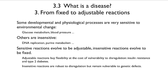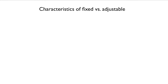Insulin resistance and type 2 diabetes are pathologies that result from an adjustable reaction. The insensitive reactions are robust to being dysregulated, but they remain vulnerable to genetic defect. When something goes wrong with an insensitive reaction — a fixed situation — it is normally a catastrophe.